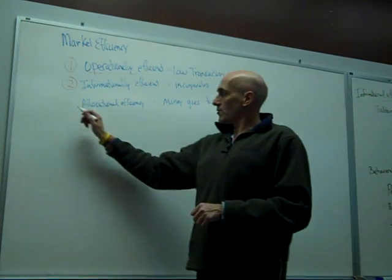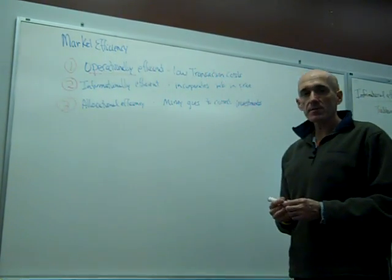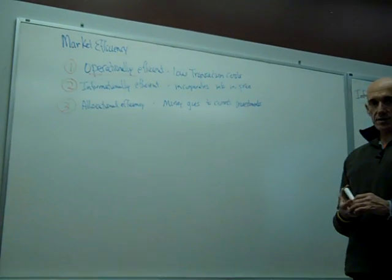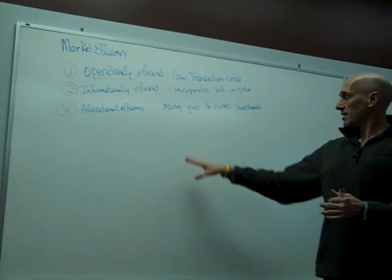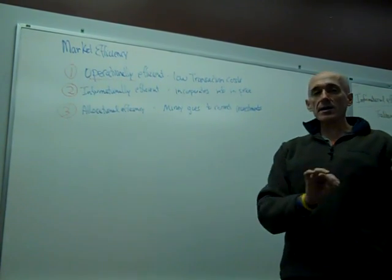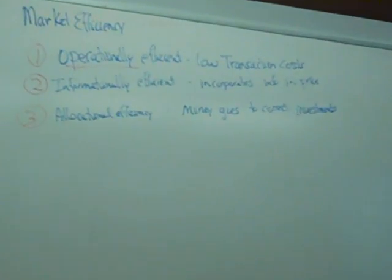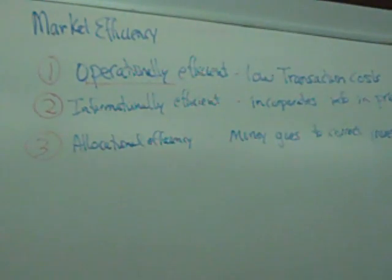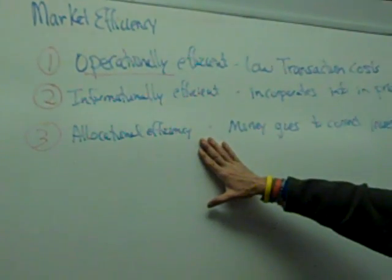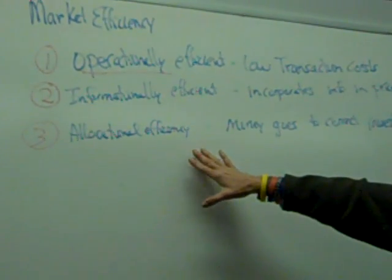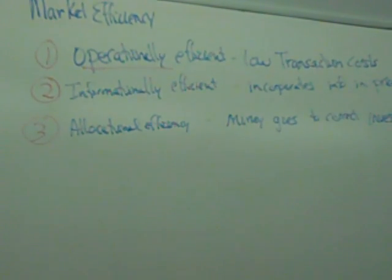And the final one, which is in some ways the most important of all of them, is allocational efficiency. Allocational efficiency is the idea that we're putting money into the right investments. So as a society, are we investing in the right things? While it may be the most important, it is in many ways the most difficult to measure, because we don't see what we didn't invest in.